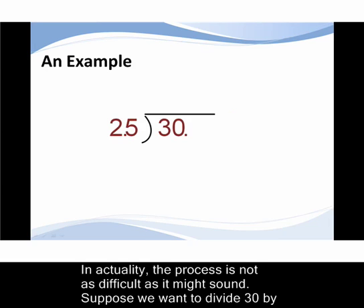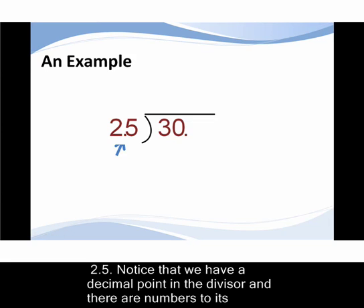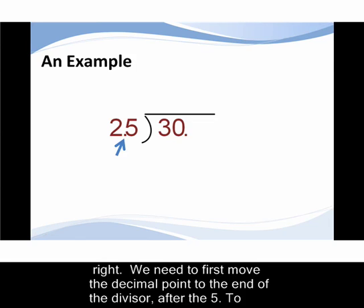In actuality the process is not as difficult as it might sound. Suppose we want to divide 30 by 2.5. Notice that we have a decimal point in the divisor and that there are numbers to its right.